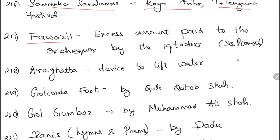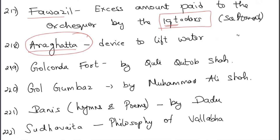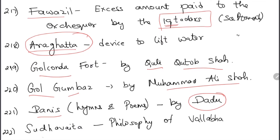Vana is a folk music of Jammu & Kashmir. The Sun Temple in Modhera was built by Bhimdev I — it has been in the news for the past two years. Sammakka Saralamma festival is celebrated by the Koya tribes in Telangana. Fawazil was the excess amount paid to the exchequer by Iqtadars beyond their required tribute during the Sultanate period. Aragata was a device to lift water during the Sultanate period, similar to a Persian wheel.